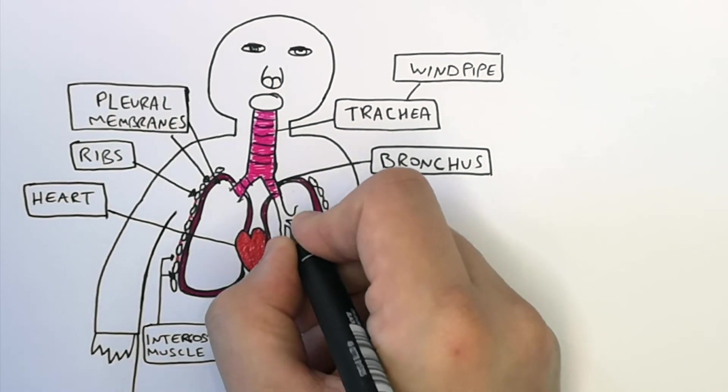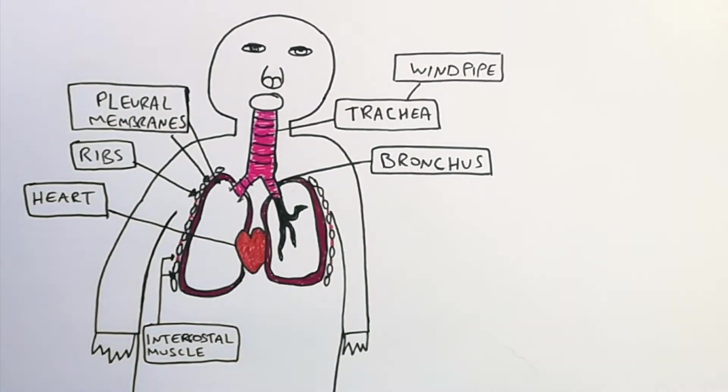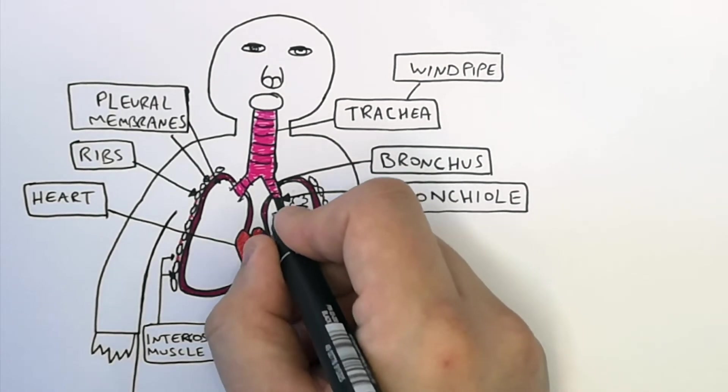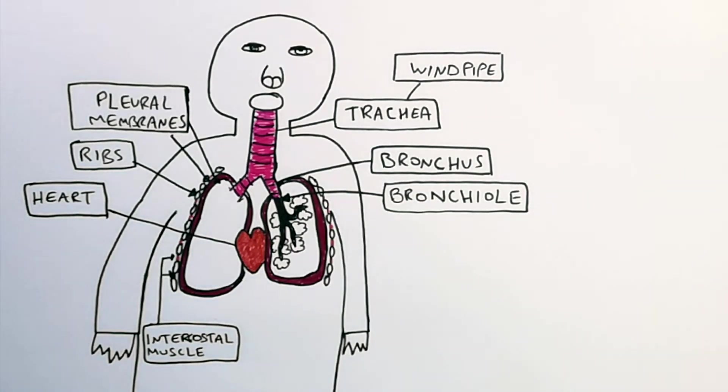Each bronchus divides further to form bronchioles. Bronchioles act to supply each alveoli with air. We have as many as 30,000 bronchioles in each lung.